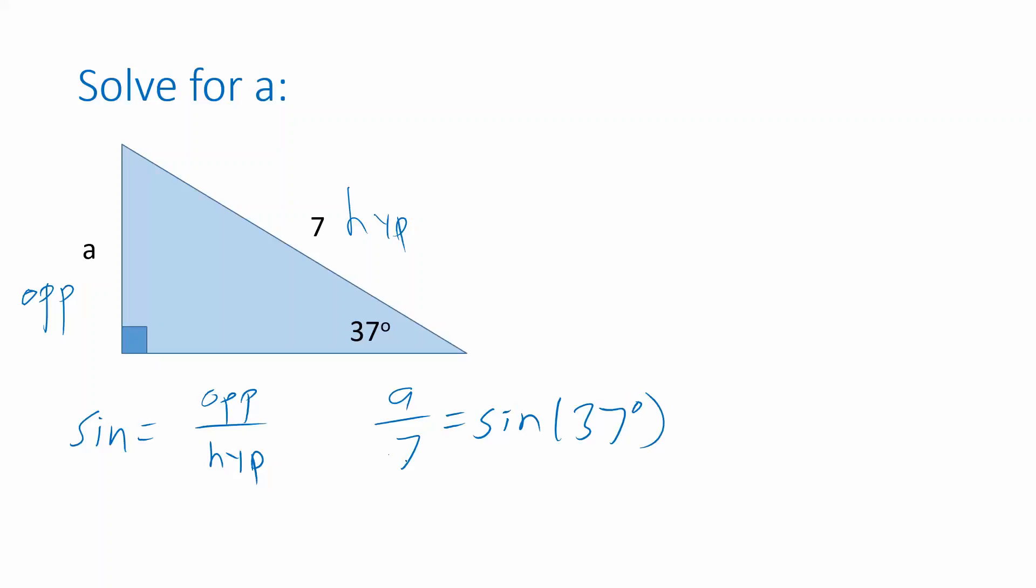By isolating A we get 7 times the sine of 37 degrees. That's an exact value, and if we want a decimal approximation we can plug that into a calculator. When I do, I get approximately 4.21, which is the length of the unknown side indicated by the symbol A.